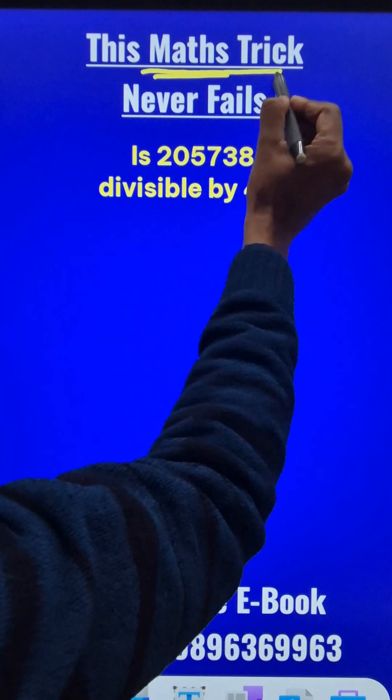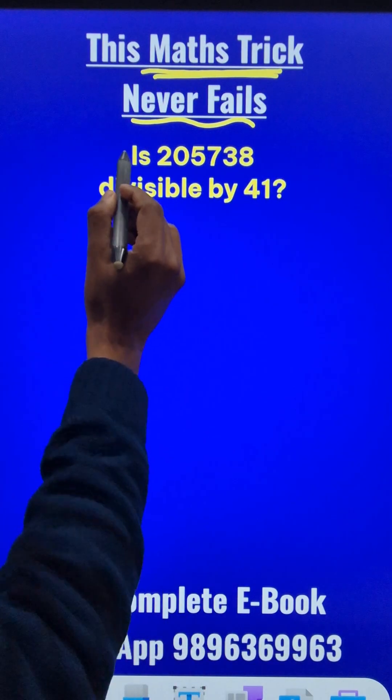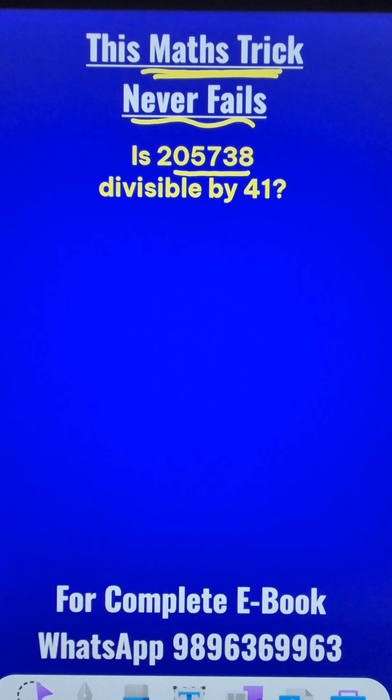Here is the shortest mathematics trick which never fails. Is this big number 205738 divisible by 41?